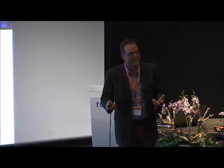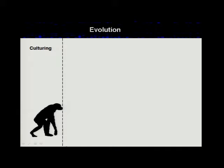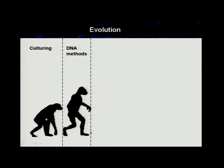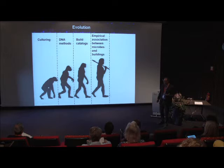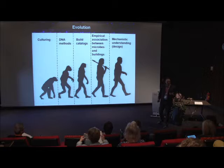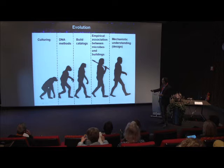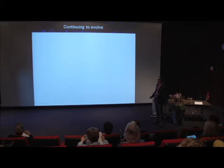As a revolution, you know, some revolutions go well and some don't, so let's hopefully evolve this revolution in a way that does go well. I'm a fan of culturing — and I don't mean that culturing is a lower status; monkeys and apes are fantastic at what they do, and culturing is fantastic at what it does. But we started there and we're moving on to DNA methods. We're building catalogs of what's in buildings. We're now making empirical associations between microbes and buildings, and hopefully we can evolve into a better mechanistic understanding so we can design buildings better. I think we're somewhere between the two right now, and the rest of my talk is a plea to go further in that direction.